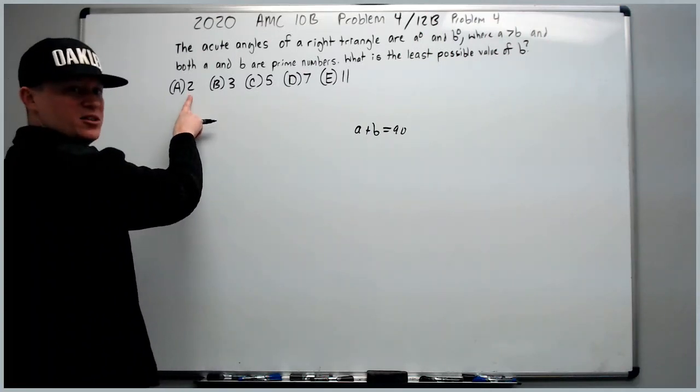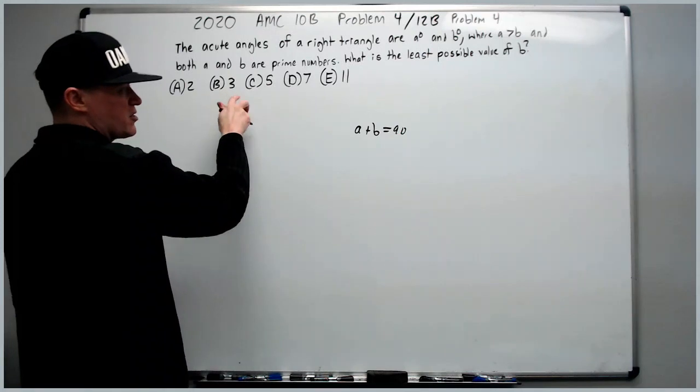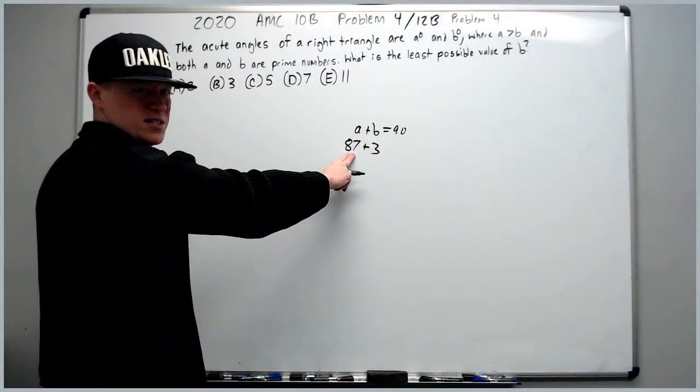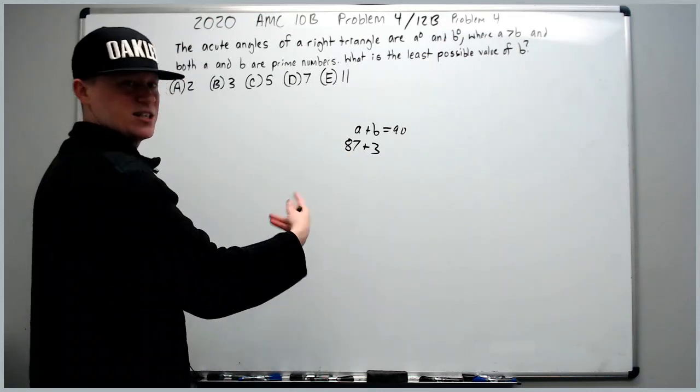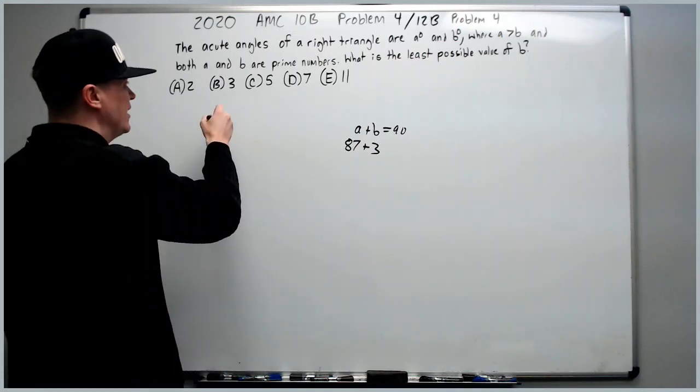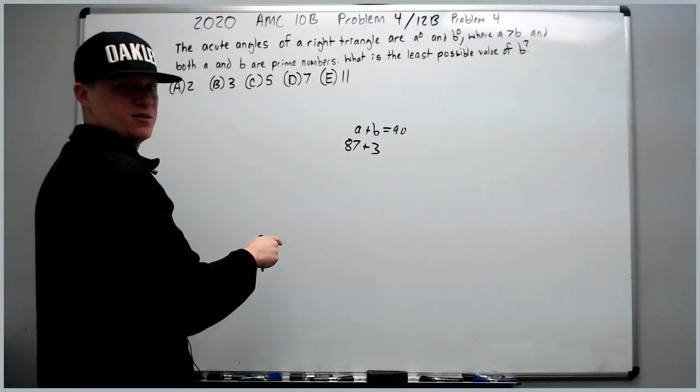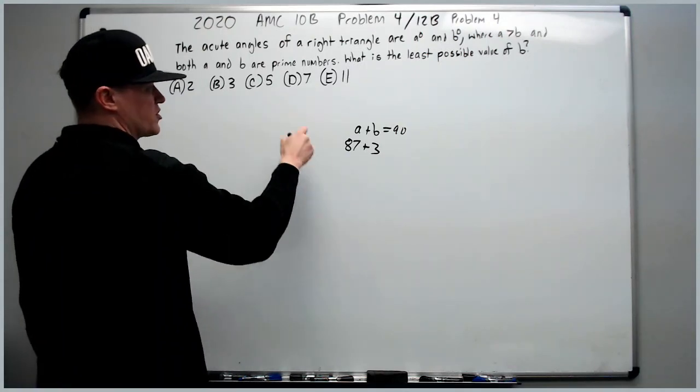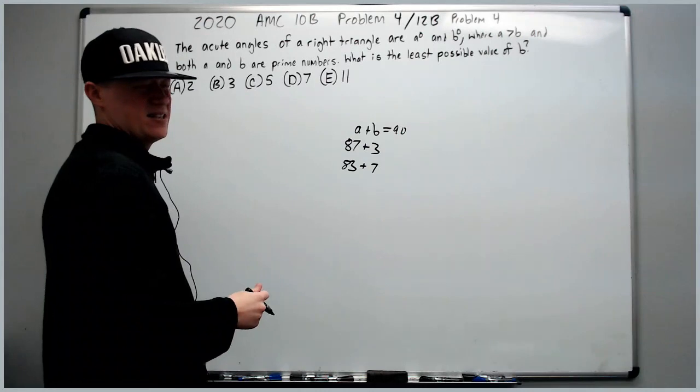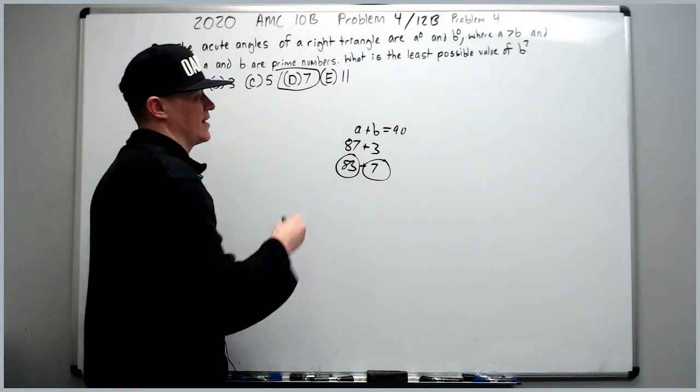We start with b could equal 2. No, because then a would be even and not prime. Could b be 3? No, then a would be 87. Always check for divisibility by 3 by adding the digits. You know this is divisible by 3 because 8 plus 7 equals 15, which is divisible by 3. Try 5. A is going to be a multiple of 5. It'll be 85, doesn't work. Try 7. 7 and 83. Good idea to know your primes less than 100. 83 is prime, so 7 is the answer.